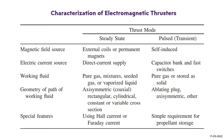The geometry of the path of the working fluid for steady state includes asymmetric, coaxial, rectangular, cylindrical, constant or variable cross-section configurations. For pulsed mode, the geometry is asymmetric, ablating, plug, and other types. Special features of the steady state mode include using Hall current or fed current, while the pulsed mode offers simpler requirements for propellant storage.